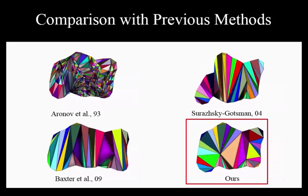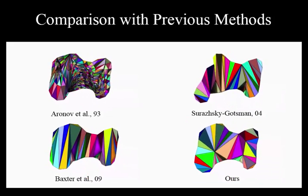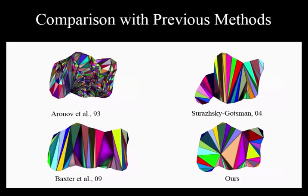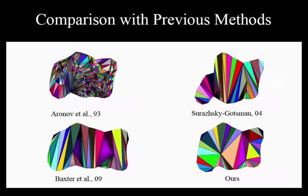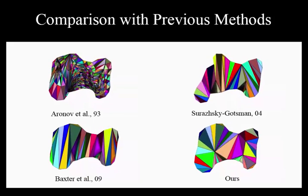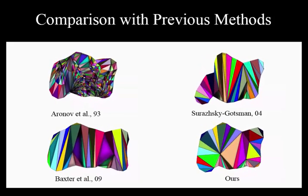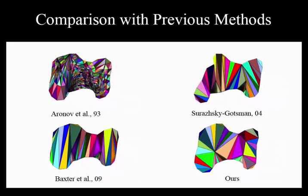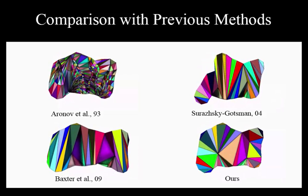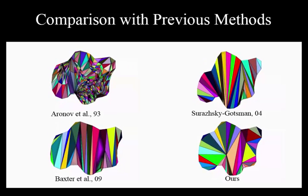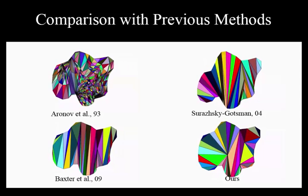In this example, compared with Baxter et al. and Surazhsky, our method creates the same number of Steiner points, but the quality of the compatible meshes has been improved significantly, and our method creates visually appealing transitions. We have also performed quantitative comparisons between triangulation qualities. Please refer to the paper for further details.